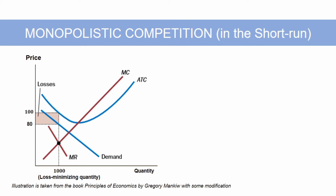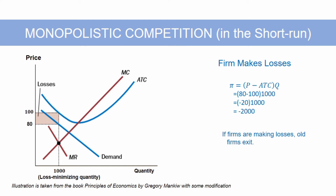In this case, the firm is unable to make a positive profit because ATC exceeds the price of the goods it sells. So the best the firm can do is to minimize its losses. If firms are making losses, old firms exit. The exit of old firms decreases the quantity produced, which causes the price to rise and thus increases the profit.